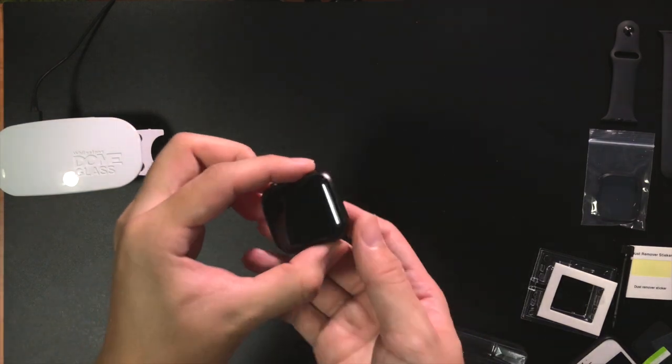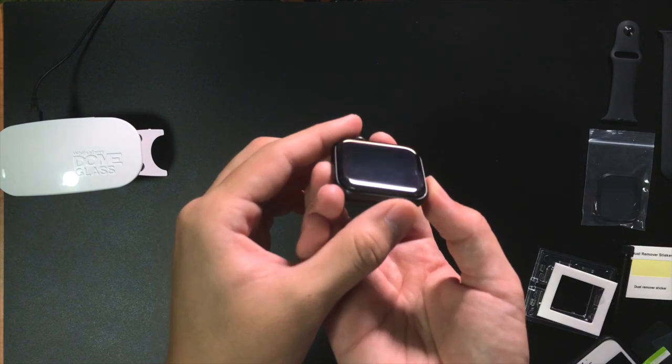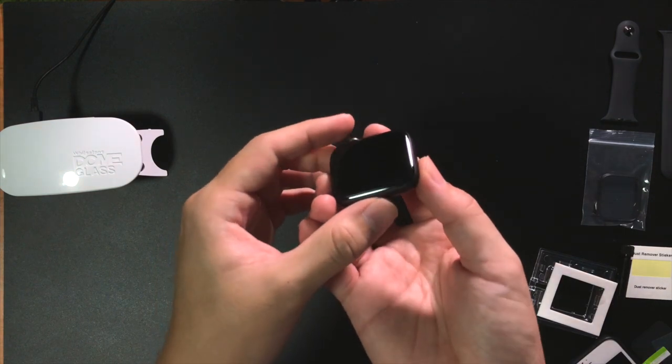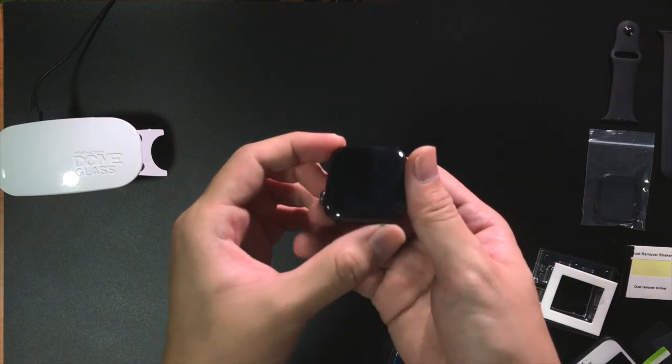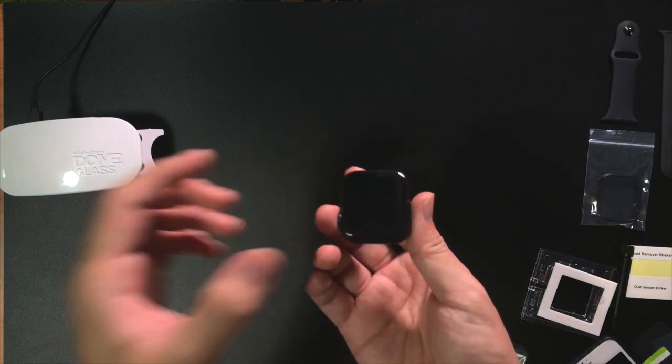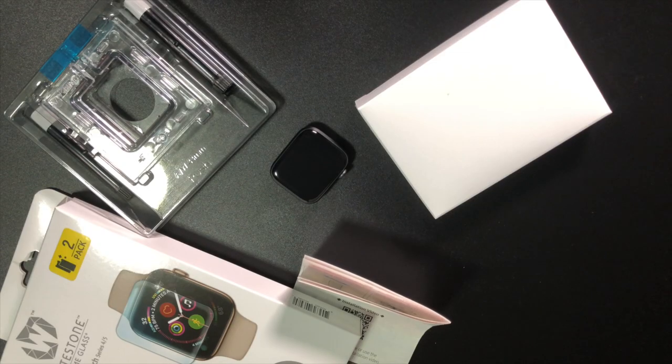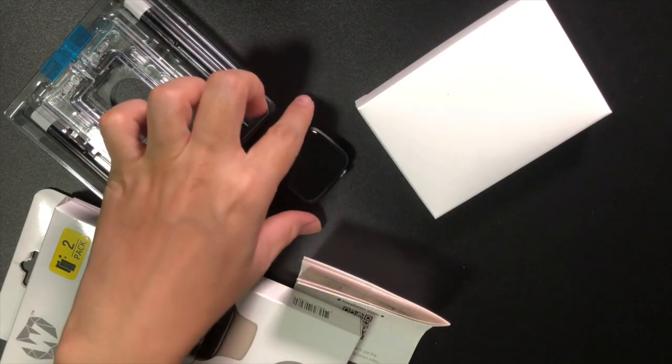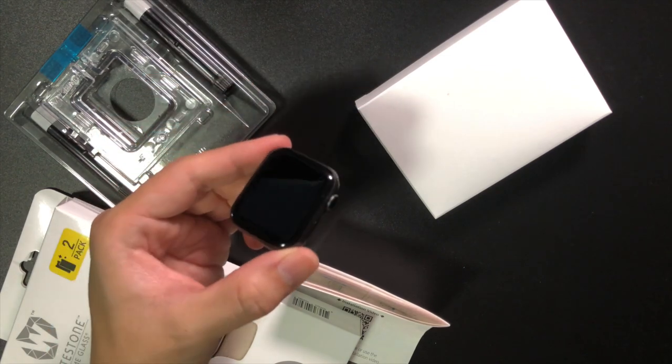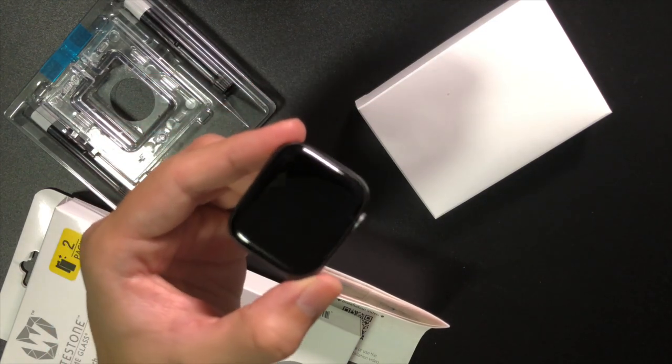And everything is ready to go. And now you have a perfect touch sensitivity flawless edge to edge tempered glass screen protector for your Apple watch. Don't forget that they actually included the bumper to protect the side of your Apple watch.